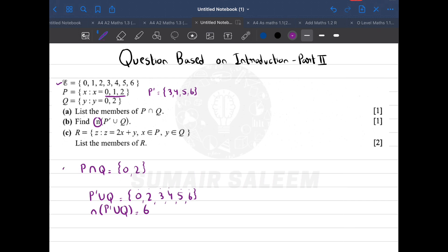Now comes part C. Part C says set R is {x + y} where x is an element of P and y is an element of Q. That means x can be either 0, 1, or 2, and y can be only 0 and 2. Let's plug in, so my set R is x plus y.